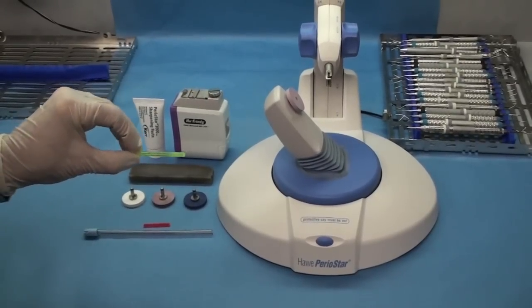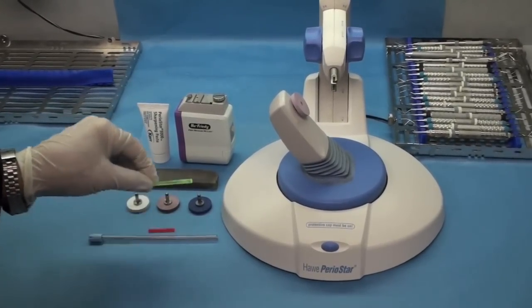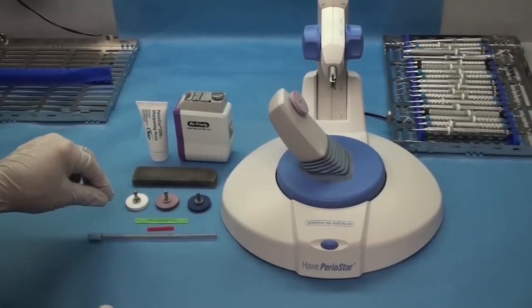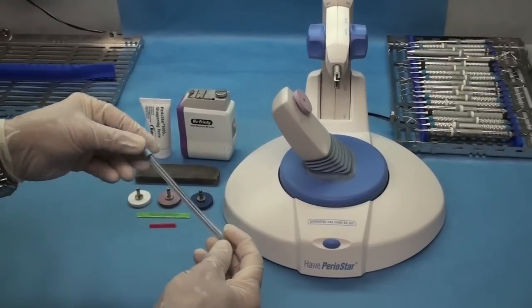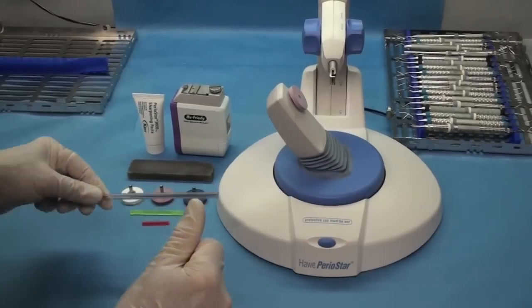This is the instrument test stick that comes with the Periostar. To tell you the truth, I mean they wear out, they get notches in them, and they're not as good for checking because we use it so much. So I really like either a saliva ejector or a high speed evacuator tip. I like these better.